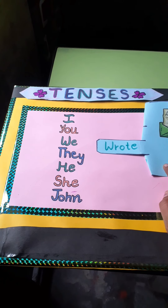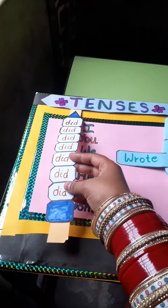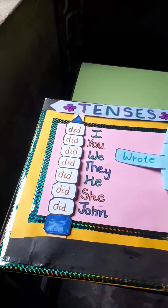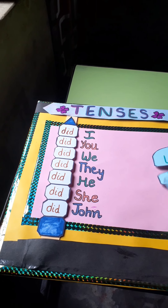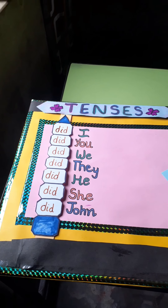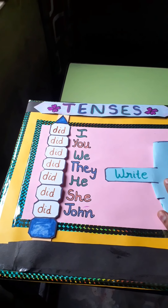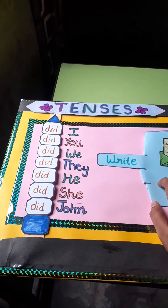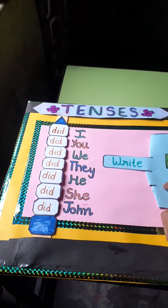Now let's make it interrogative. For interrogative, I need 'did.' We'll place 'did' before the subject, and use the first form of the main verb, which is 'write.' Did I write? Did you write? Did we write? Did they write? Did he write? Did she write? And did Joan write?